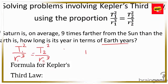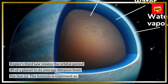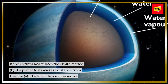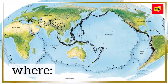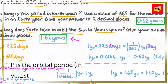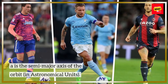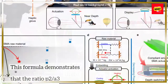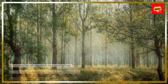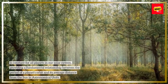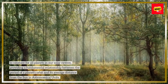Formula for Kepler's 3rd Law: Kepler's 3rd law relates the orbital period (p) of a planet to its average distance from the Sun (a). The formula is expressed as p² = a³, where p is the orbital period in years, and a is the semi-major axis of the orbit in astronomical units. This formula demonstrates that the ratio p²/a³ is constant for all planets in our solar system, providing a fundamental relationship between the period of a planet's orbit and its average distance from the Sun in astronomical units.